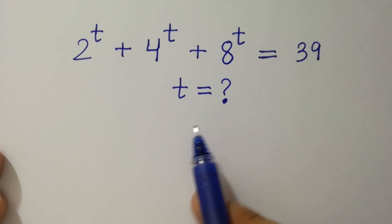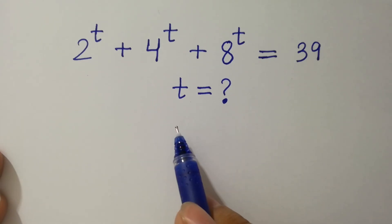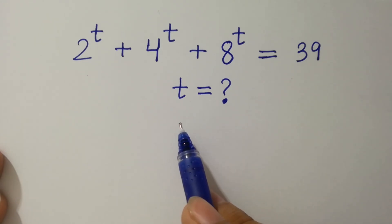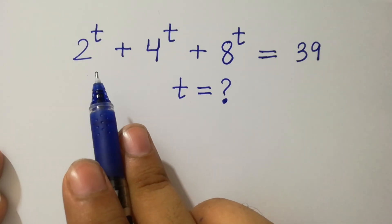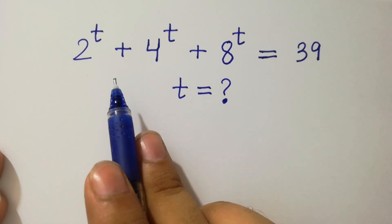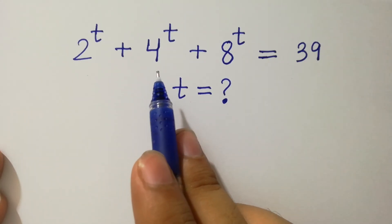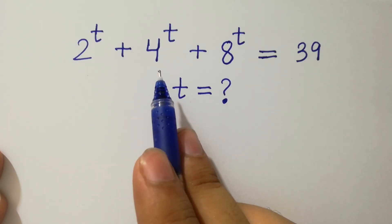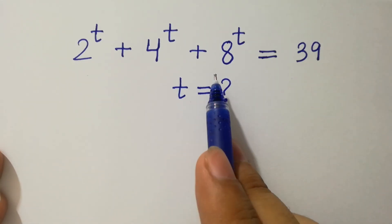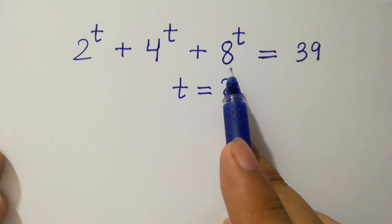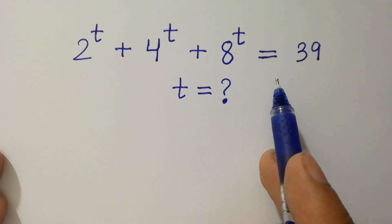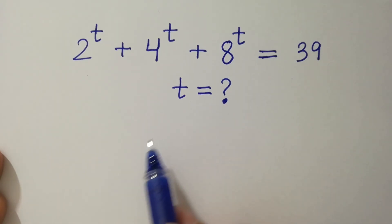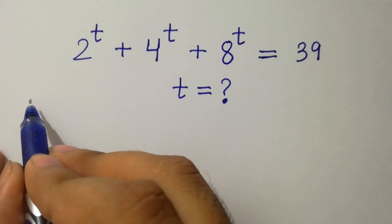Hello friends. Find the value of t if 2 to the power t plus 4 to the power t plus 8 to the power t equals 39. Let's have a solution.